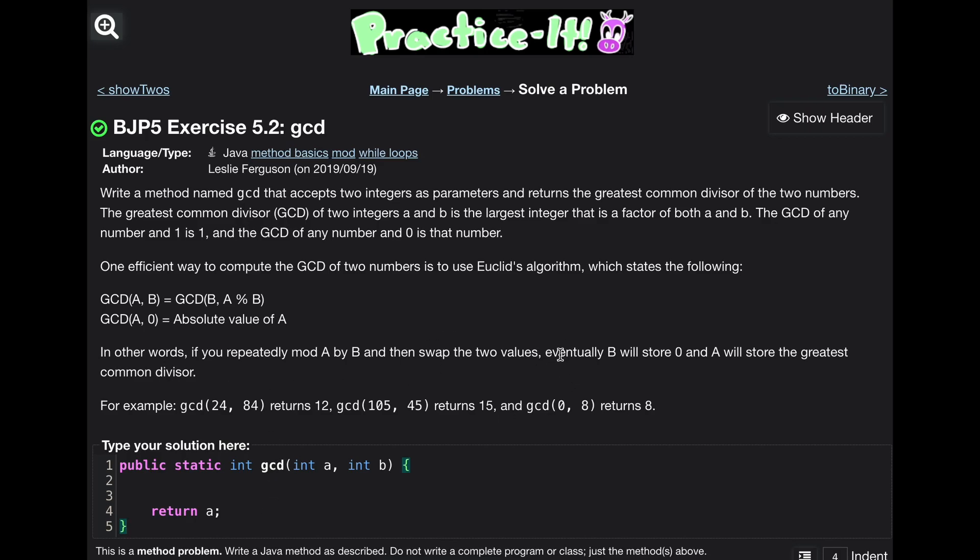Now, we're going to do this until b is zero. Eventually b will store zero, and we can see that even in the example here, GCD a and zero, it stops and returns the absolute value of a. So what we can have in here is a while loop, and this while loop is going to run as long as our b is not equal to zero. Otherwise, it's just going to break out and return.